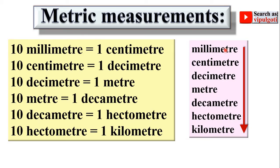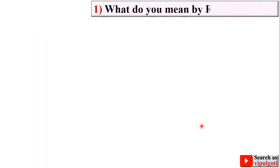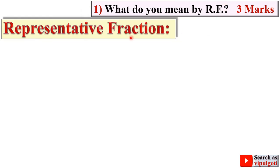If you multiply millimeter by 10 you get centimeter, and if you multiply centimeter by 10 you get decimeter. So it is a 10-times increase in this order — you have to remember this. Now let us start with question number one: what do you mean by RF?